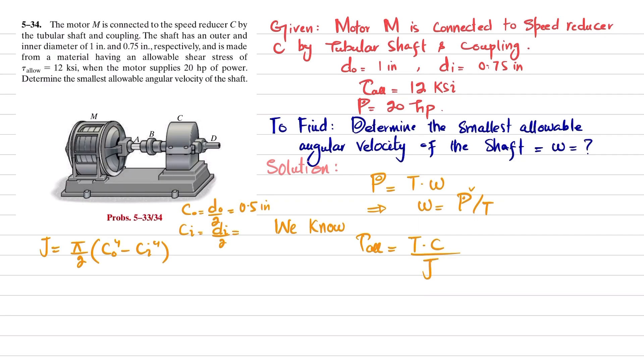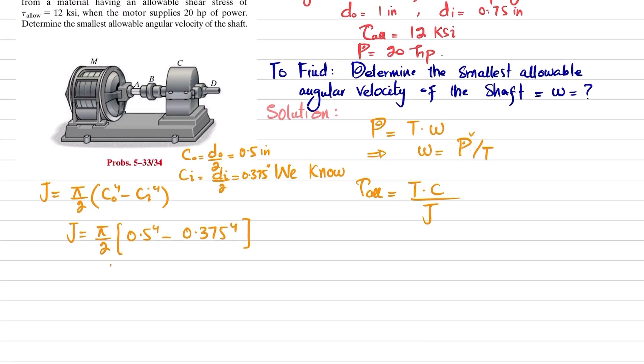So you can just put the value. J is equal to pi by 2 times (c_o is 0.5 to the power 4 minus c inner is 0.375 to the power 4). So when you calculate it, you will get J is equal to 0.06711 inch to the power 4.